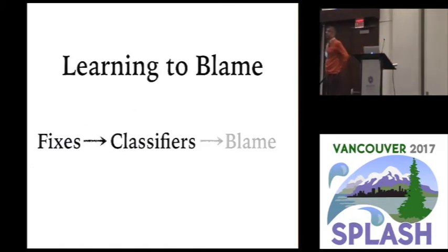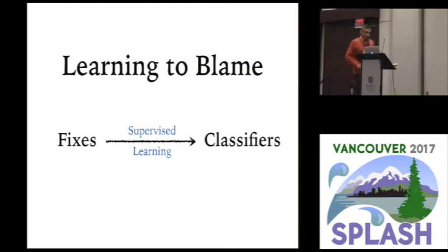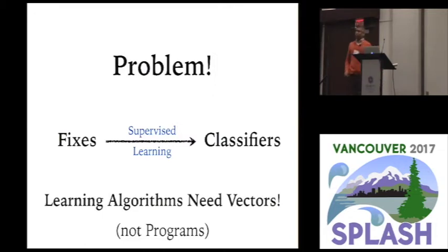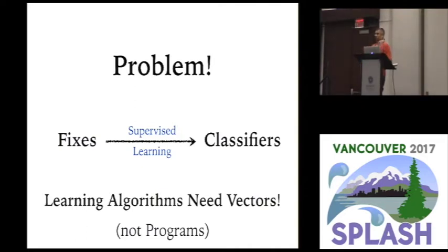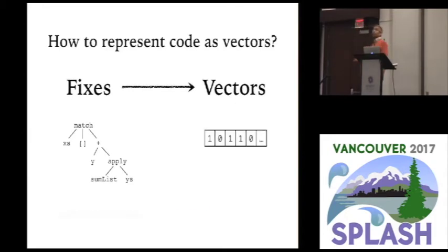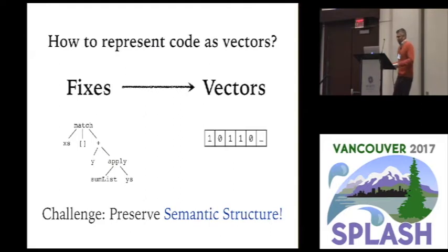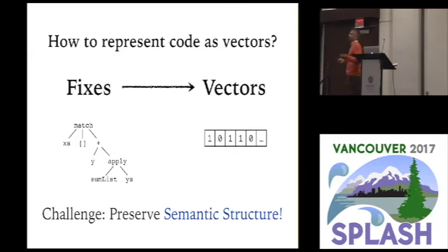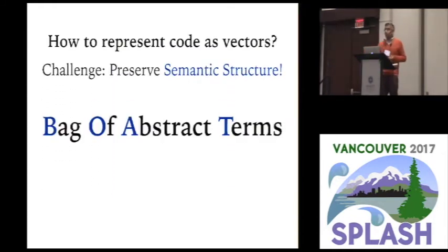How do we go from fixes to classifiers? We're in a bit of a pickle because we don't want to reinvent decades of work in machine learning. We want to use off-the-shelf supervised learning algorithms. But the problem is that all these algorithms don't work with programs — they certainly don't work with OCaml programs; they all require vectors of numbers. If you're recognizing cat pictures, a vector of numbers is easy: you just read off the pixel values. But what vector could you possibly get from an ML program? You could write it out to disk as zeros and ones, but that loses all the semantic structure.